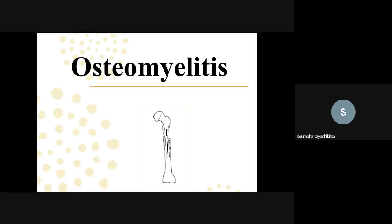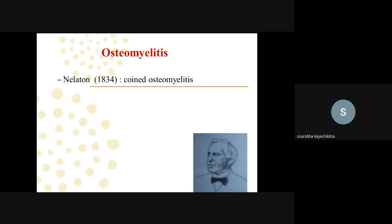In the previous class we discussed osteoarthritis and osteoporosis. Our next topic is osteomyelitis. Osteo means bone and myelo means marrow — combined together with the suffix -itis meaning inflammation. So osteomyelitis is an inflammation of both bone and marrow. The name osteomyelitis was given by Nelaton in 1834.